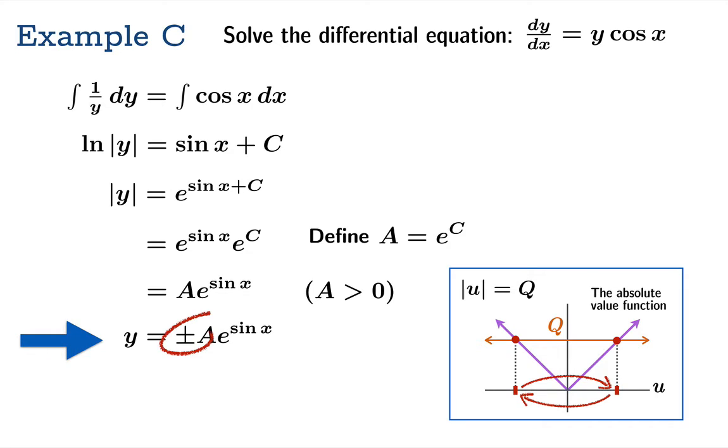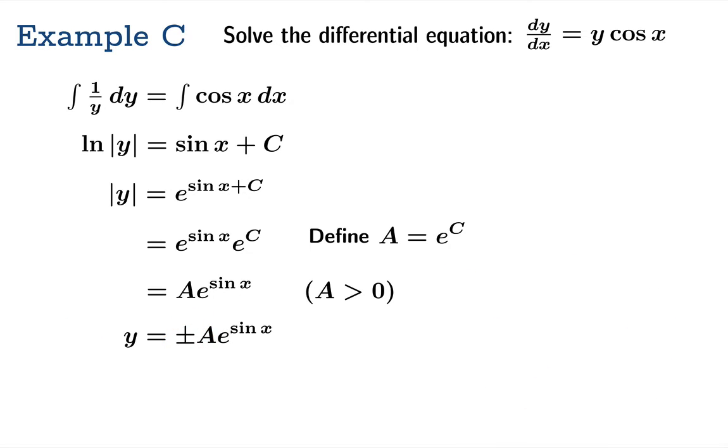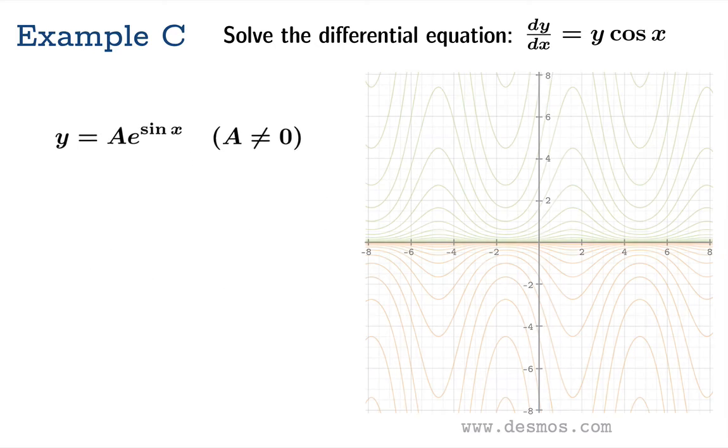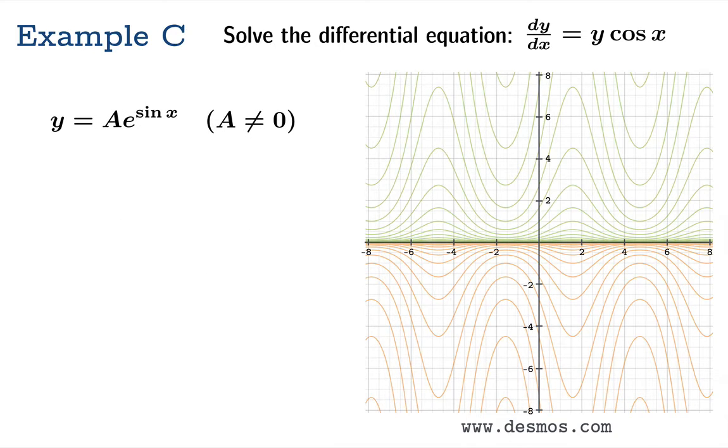y equals plus or minus a e to the sine x. Now we've got something that's really much too complicated here because if a is positive and then you're allowed to use either plus or minus a, we might as well just declare a to be non-zero. That takes care of both cases. So we'll clean that up: y equals a e to the sine x, where a can be any non-zero number.